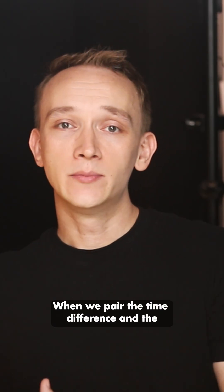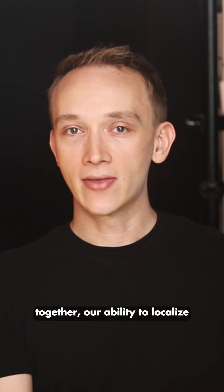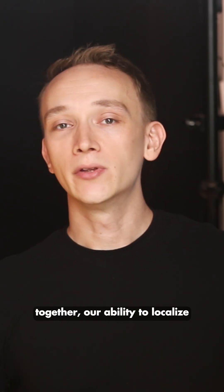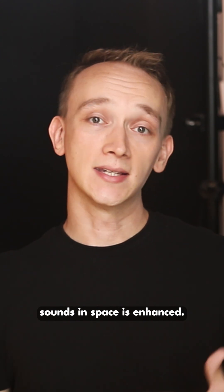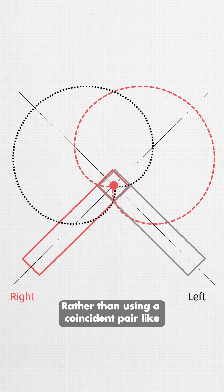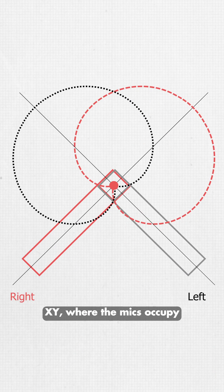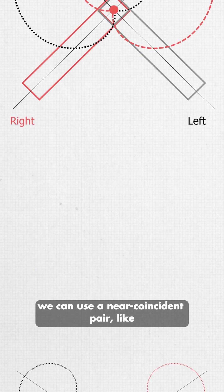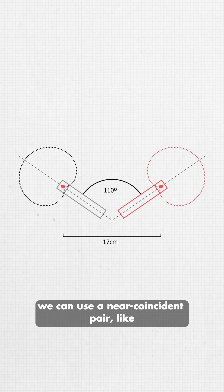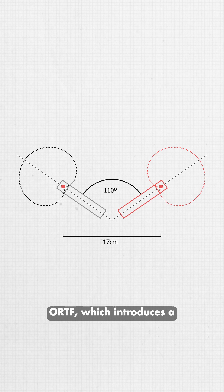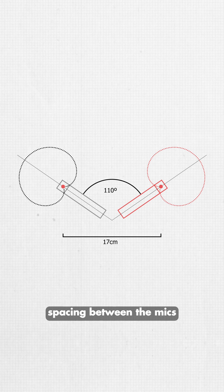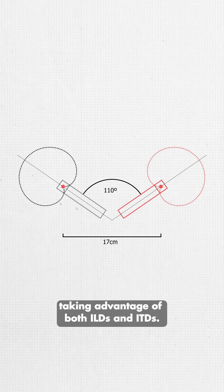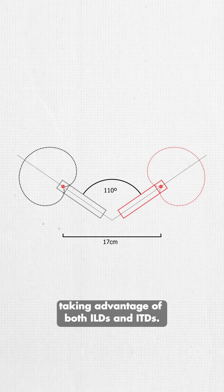When we pair the time difference and the level difference together, our ability to localize sounds in space is enhanced. Rather than using a coincident pair like XY, where the mics occupy the same point in space, we can use a near-coincident pair like ORTF, which introduces a spacing between the mics, taking advantage of both ILDs and ITDs.